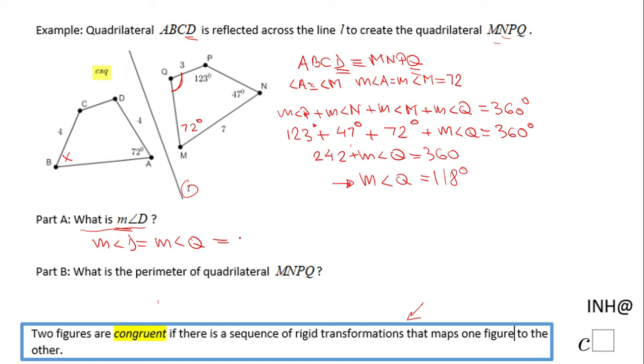The measure of angle D equals the measure of angle Q, so angle D is also 118 degrees. That's Part A of this problem. Part B is asking us the perimeter of quadrilateral MNPQ. We have MN which is 7, and QP which is 3, but we don't have the other two sides.